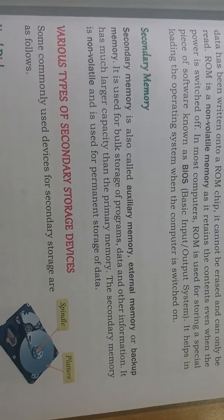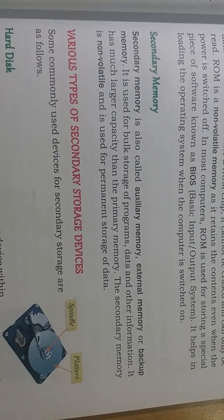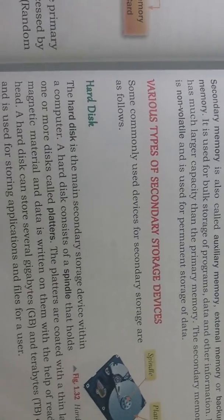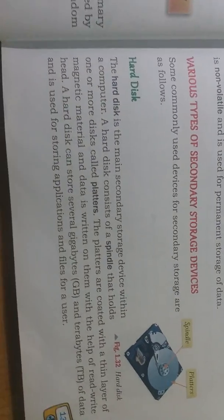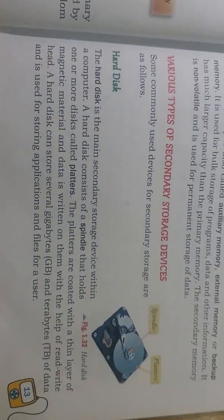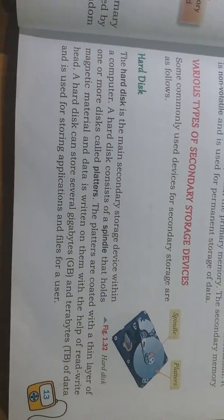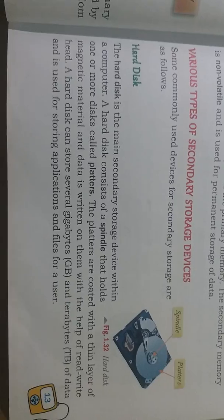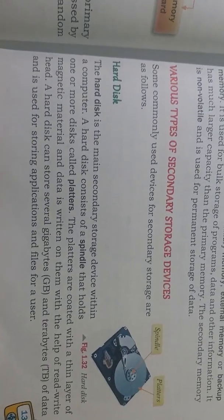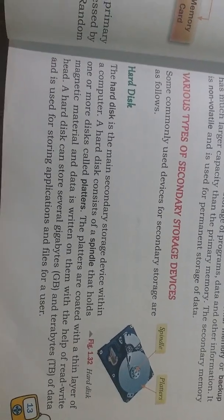Secondary memory is also called auxiliary memory or external memory, where you can store data permanently and use it anytime, anywhere. The most common secondary storage is the hard disk, which is present inside a computer. Nowadays external hard disks are also available with USB cord. Hard disks store data on magnetic platters and range from a few gigabytes to a few terabytes.